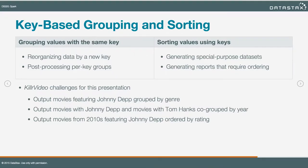We're going to output movies featuring Johnny Depp grouped by genre. We want to output movies featuring Johnny Depp and movies with Tom Hanks co-grouped by year — that's going to take some explanation, but we'll get there. And we're going to look for movies from 2010 featuring Johnny Depp ordered by rating.